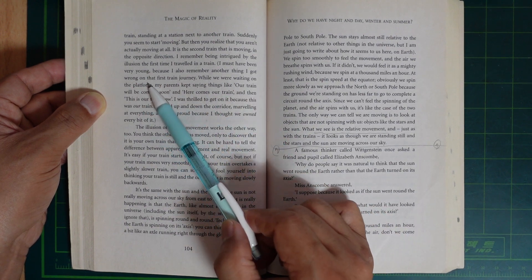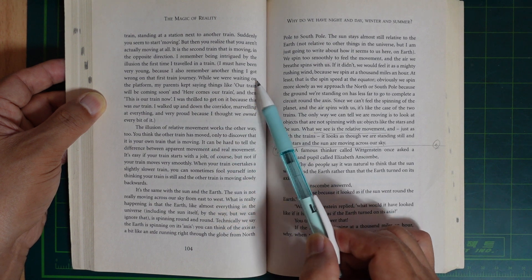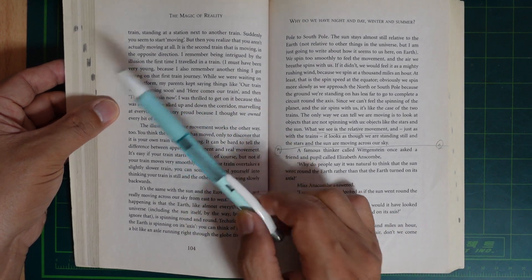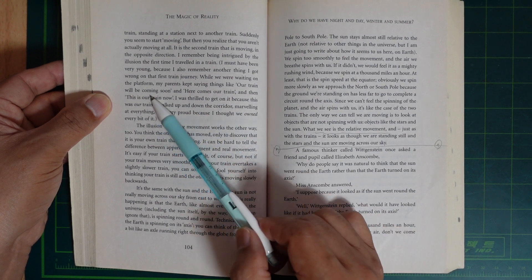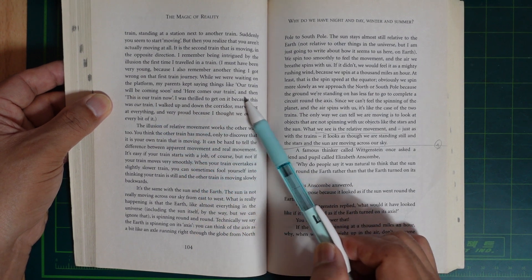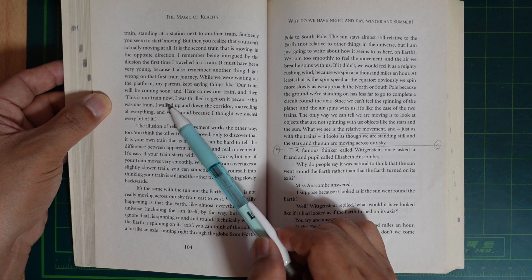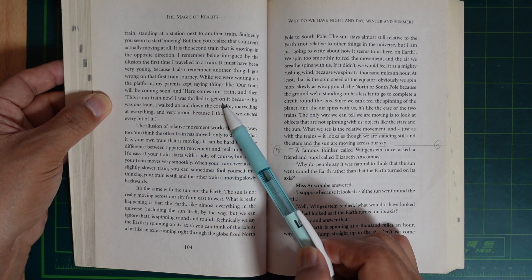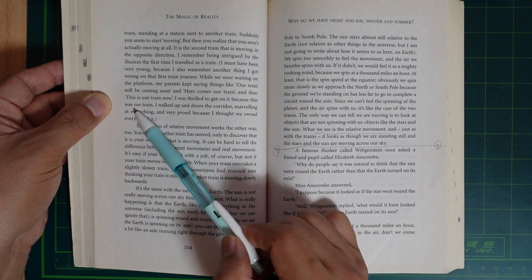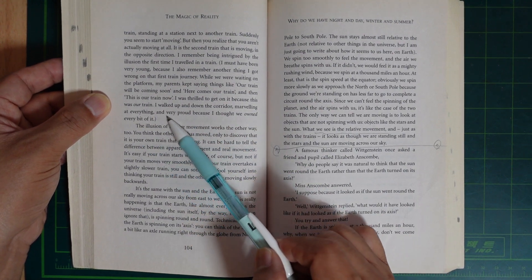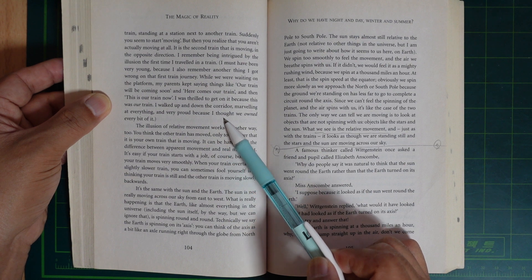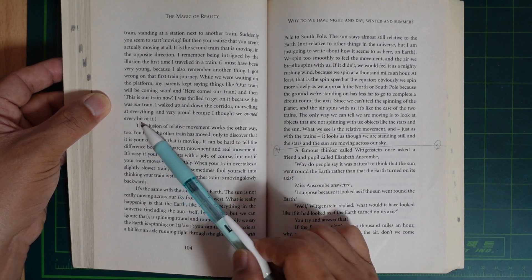I must have been very young, because I also remember another thing I got wrong on that first train journey. While we were waiting on a platform, my parents kept saying things like our train will be coming soon, and here comes our train, and this is our train now. I was thrilled to get on it because I thought this is our train. I walked up and down the corridor marveling at everything and very proud, because I thought we owned every bit of it.